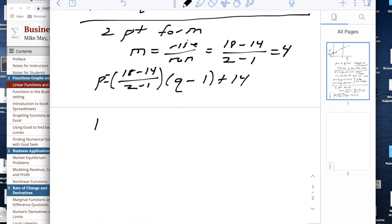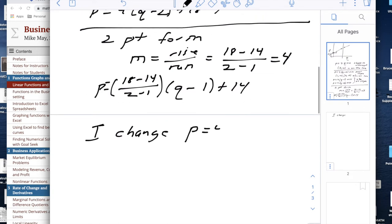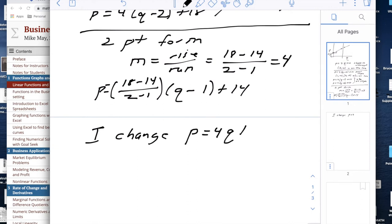General form: I change P equals 4Q plus 10 to 0 equals minus P plus 4Q plus 10.